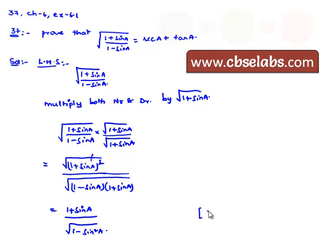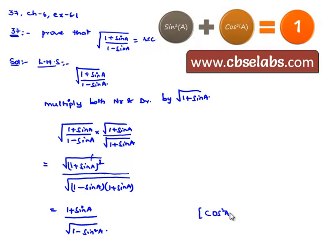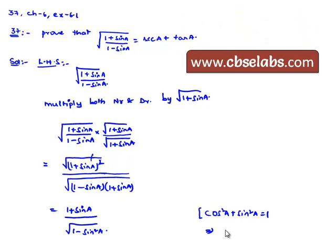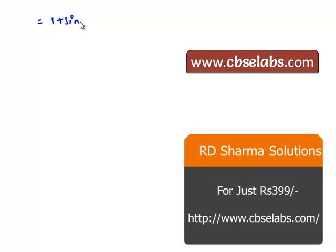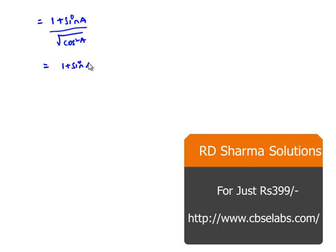But from the identity, we know that cos² A plus sin² A equals 1, which implies cos² A is nothing but 1 minus sin² A. Therefore, substituting this, we get (1 plus sin A) divided by square root of cos² A.